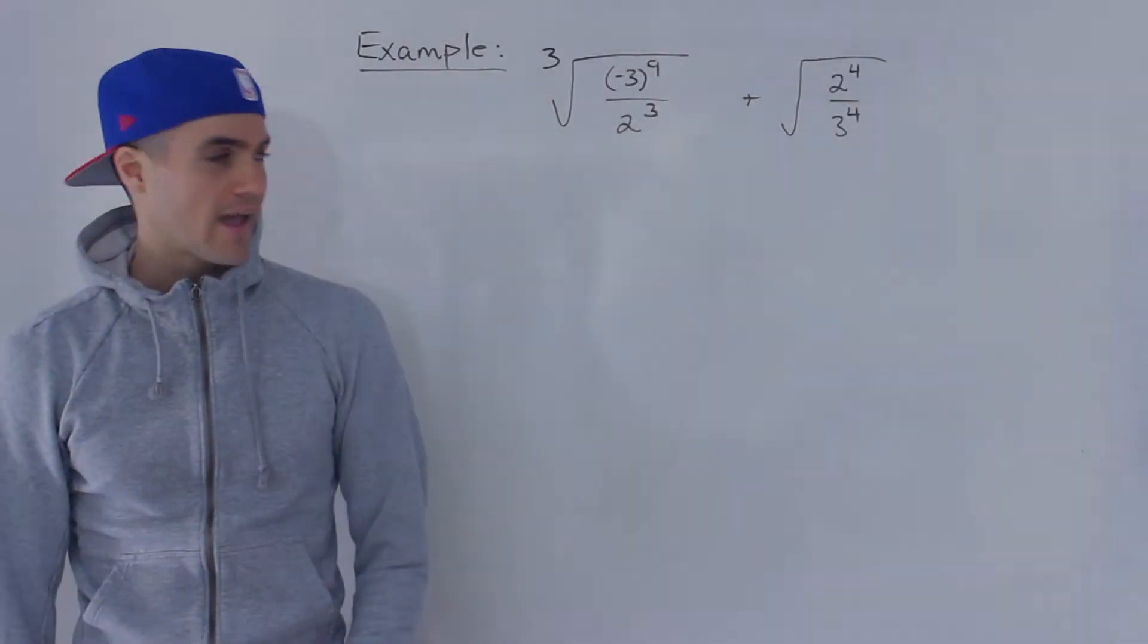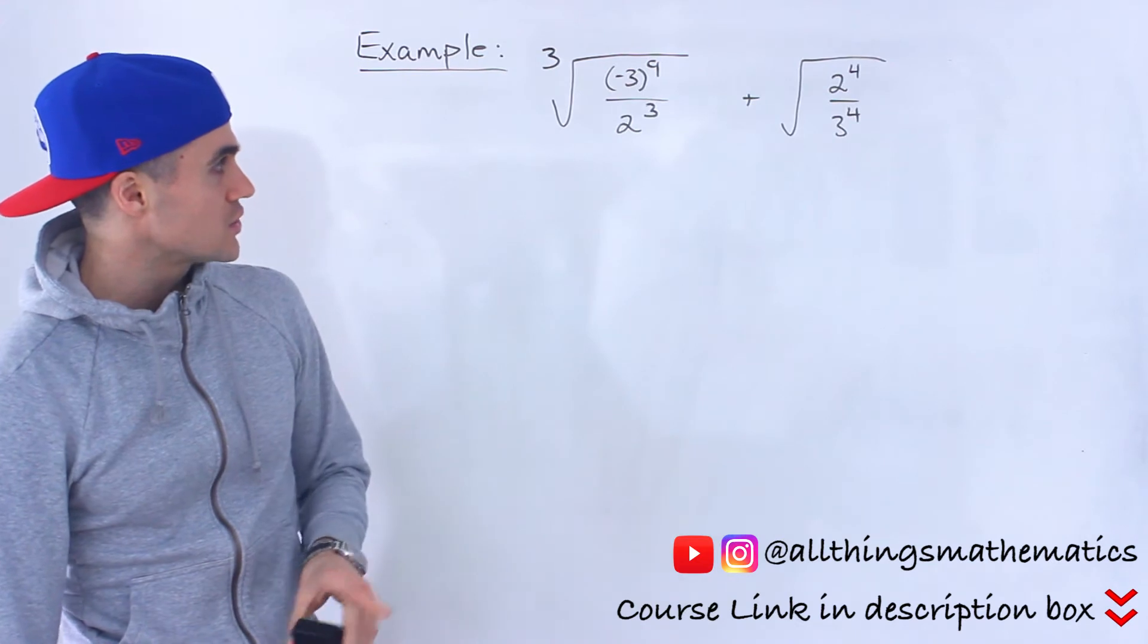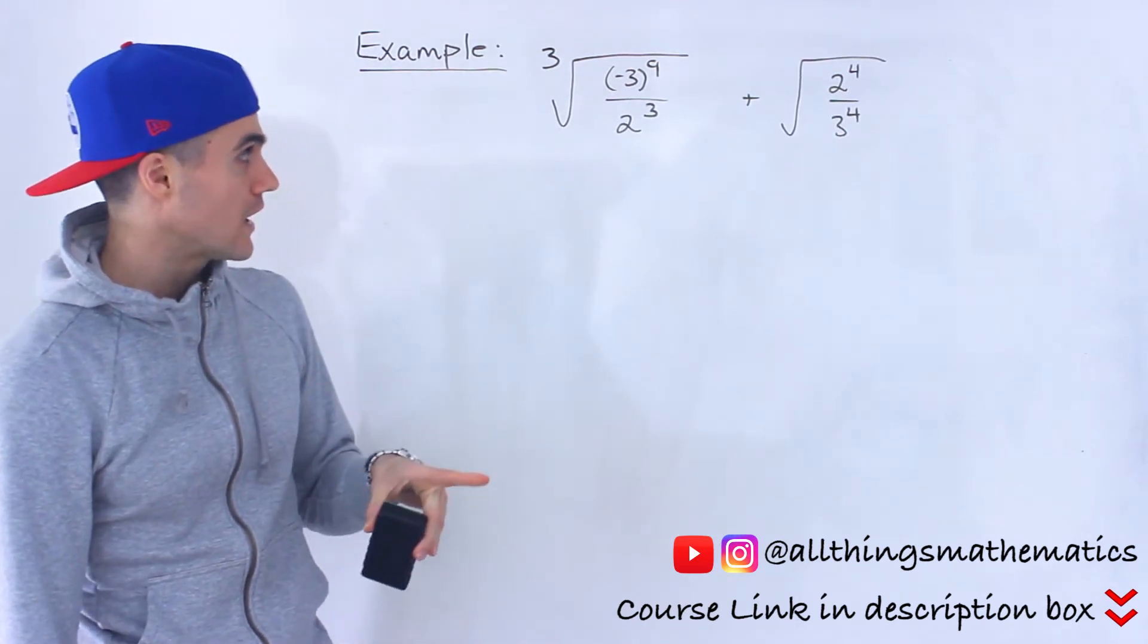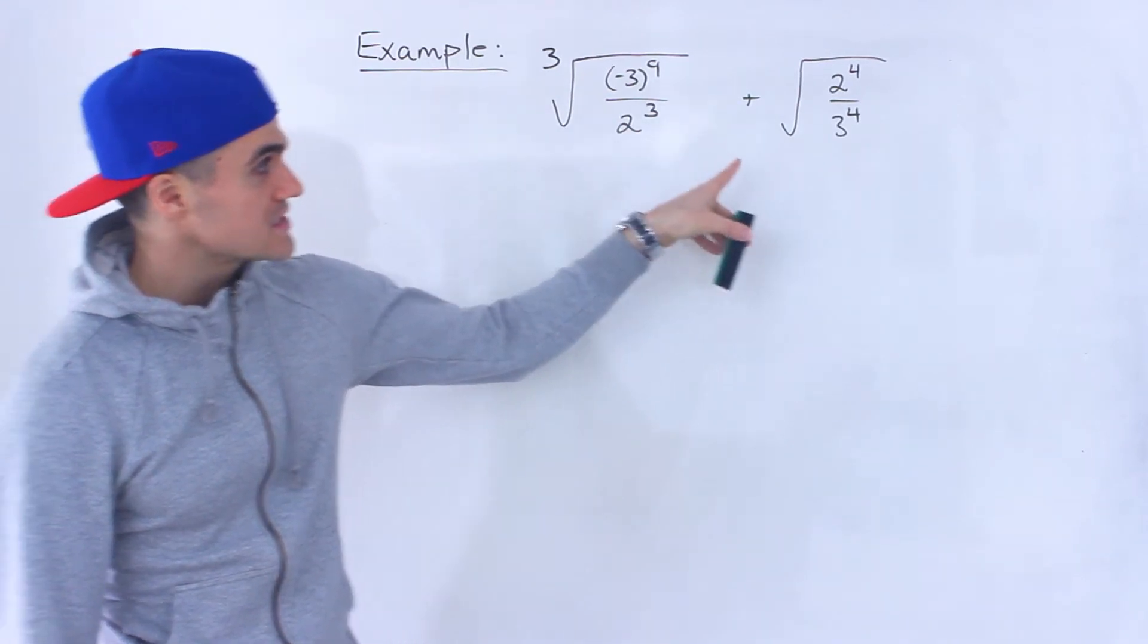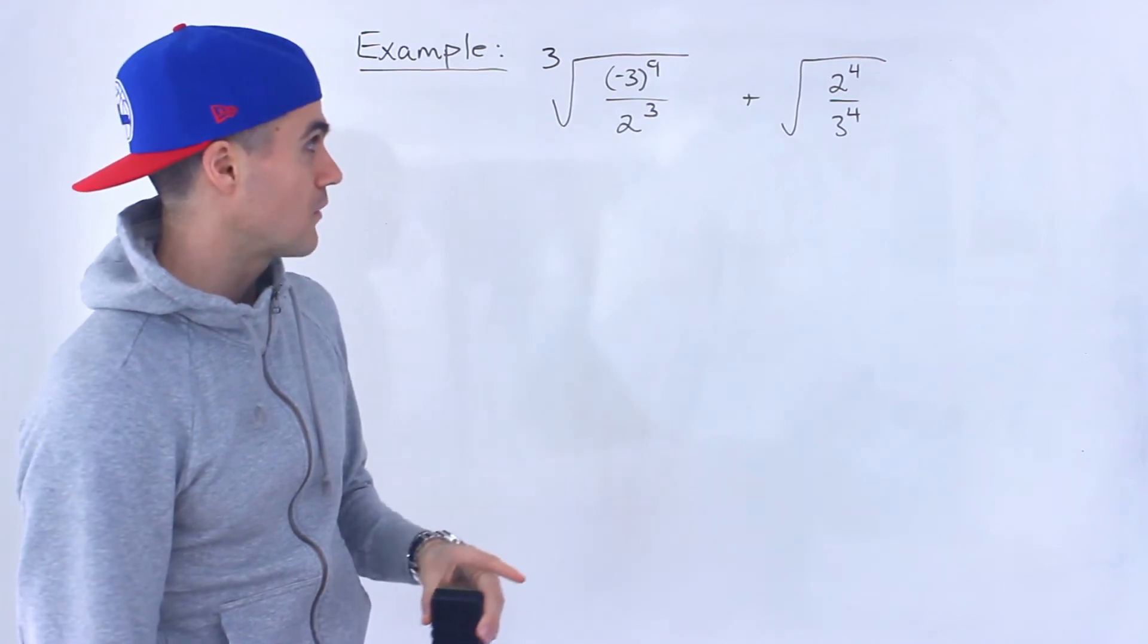Welcome back everyone, Patrick here, and in this video we're going to solve this expression. We have the third root of negative 3 to the power of 9 over 2 to the power of 3, plus the square root of 2 to the power of 4 over 3 to the power of 4.